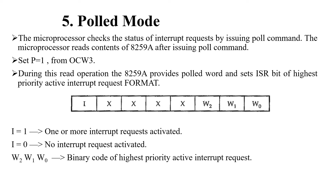Polled mode is useful if there is a routine common to several levels. The INTA bar, that is the interrupt acknowledgement sequence, is not needed. Another application is to use polled mode to expand the number of priority levels to more than 64. As we know, a single 8259 can handle 8 interrupt requests. In cascaded mode, by attaching 8 8259s to the master, a total of 64 interrupt requests can be handled. If more than 64 interrupts are to be handled, then polled mode of 8259 can be used.